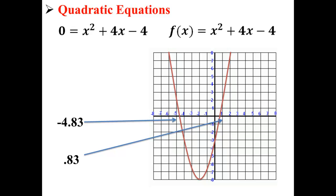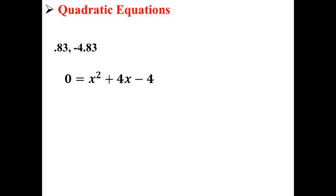Here we can see that the parabola passes through the x-axis at negative 4.83 and 0.83. So the solutions of our equation are 0.83 and negative 4.83. As you can see, when I plug those values into the equation, the equation will be equal to 0.